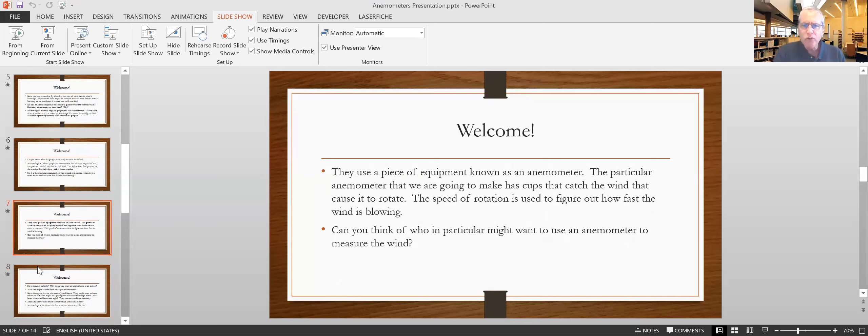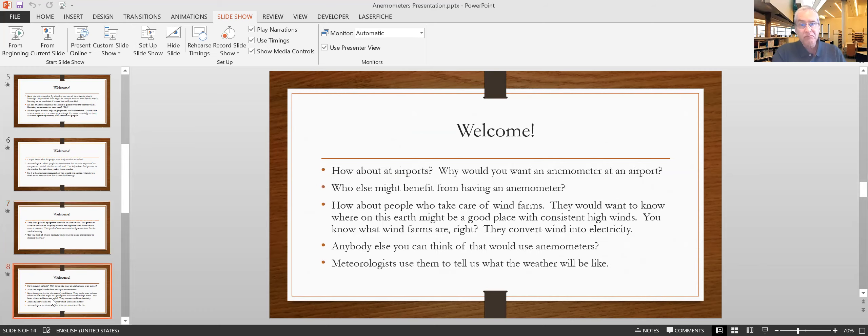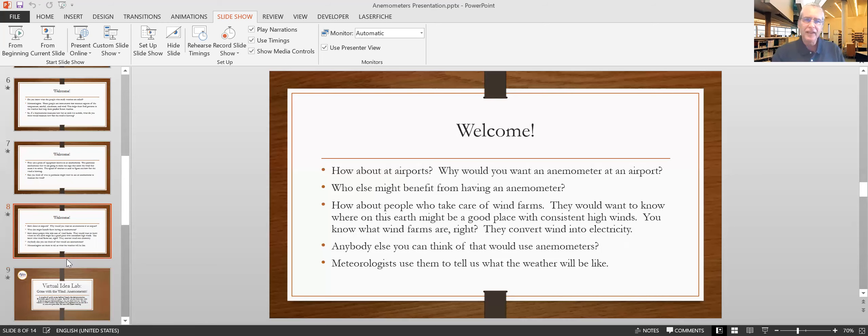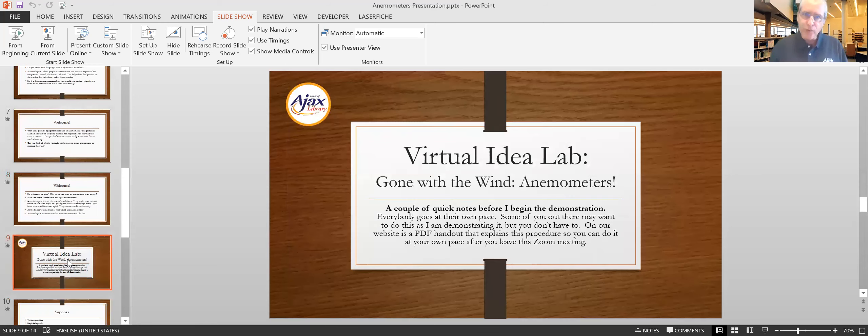They use a piece of equipment known as an anemometer. The particular anemometer that we're going to make has cups. And these cups will catch the wind and cause it to rotate. The speed of the rotation is used to figure out how fast the wind is blowing. Can you think of who might want to use an anemometer? Airports? Absolutely. Who else? People who take care of the wind farms. They would want to know where on the earth might be a good place for consistent high winds. You know what wind farms are, right? They convert the wind into electricity. And anybody else that might use anemometers? Meteorologists? Absolutely. They want to know what the weather is going to be like. And that includes the wind.